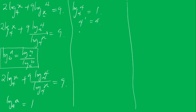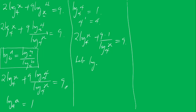Substituting log 4 base 4 equals 1 into the equation, we now have 2 log X base 4 plus 9 times 1 divided by log X base 4 equals 9. Let log X base 4 be equal to V. Substituting V, we have 2V plus 9 all over V is equal to 9.